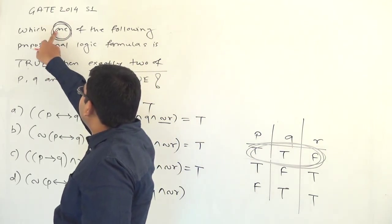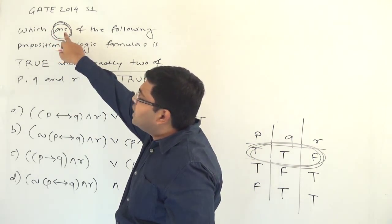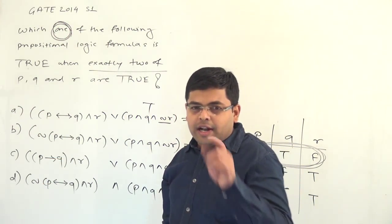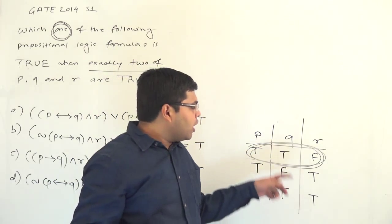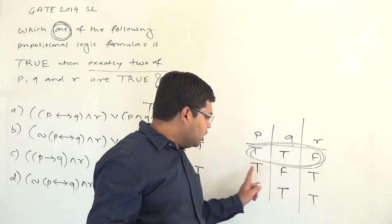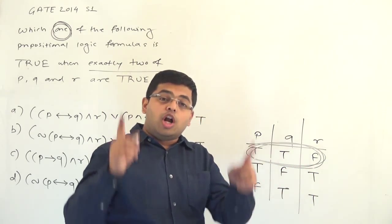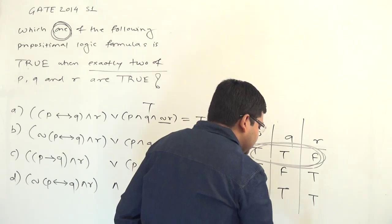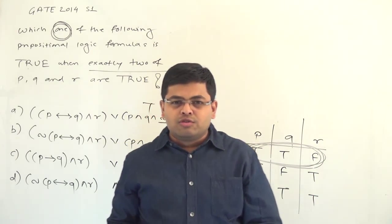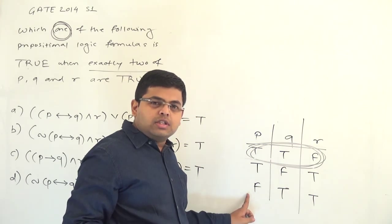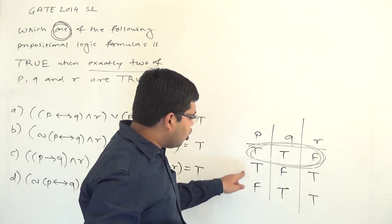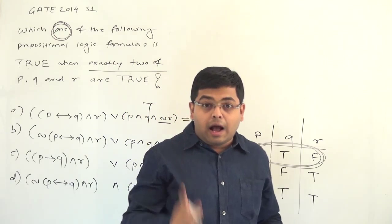But the question is very clearly asking which one of the following propositional logic formulas is true — meaning the formula should be true for any combination of the truth values. It should be true on T, T, F; it should be true on T, F, T; and it should also be true on F, T, T. Just based upon one combination, we were trying to evaluate the formula, but the formula should be true for all three possible combinations of P, Q and R.